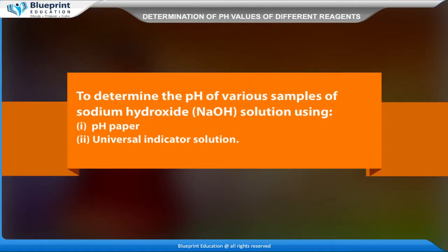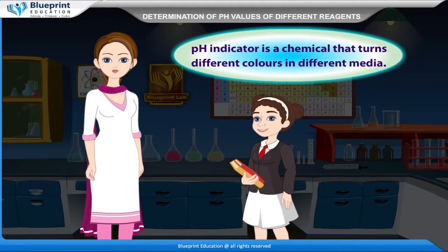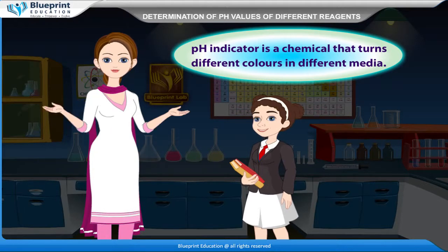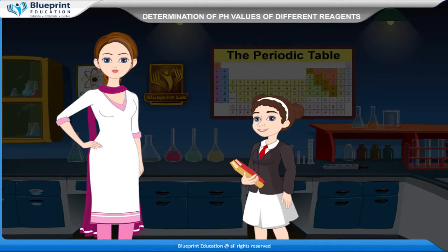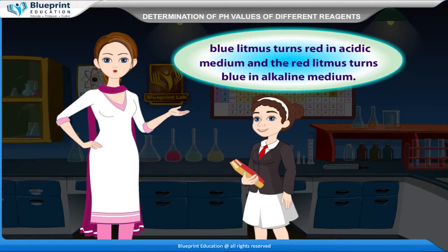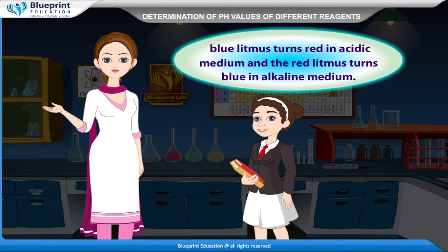To determine the pH of various samples of sodium hydroxide (NaOH) solution using pH paper and universal indicator solution. A pH indicator is a chemical that turns different colors in different media. For example, blue litmus turns red in acidic medium and red litmus turns blue in alkaline medium.